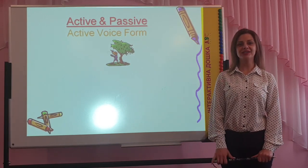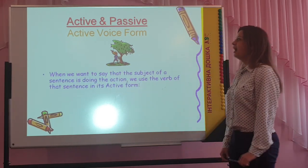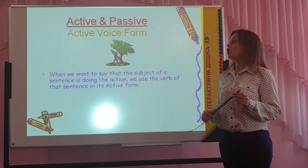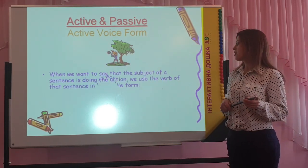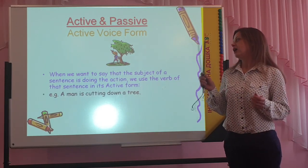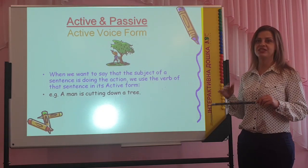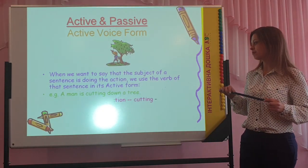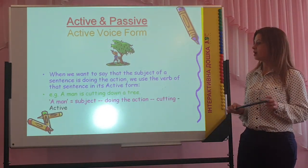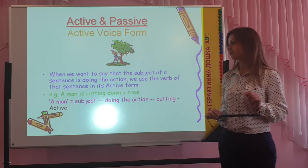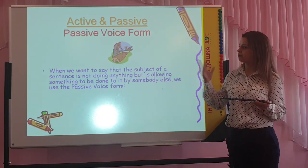Hello, I'm Helen and today we are going to talk about the passive and active verbs. What is an active verb? When we want to say that the subject of the sentence is doing the action, we use the active verb. For example, a man is cutting down a tree. A man is the subject doing the action — cutting the tree. In this sentence we use the active verb of present simple tense.